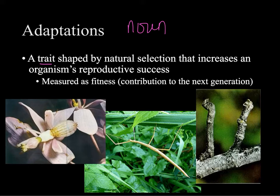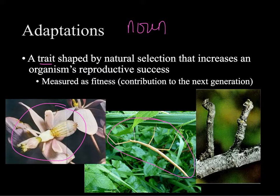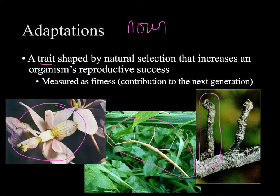One of the most common adaptations we see here is camouflage. Starting with the picture on the left, there's an insect camouflaged to look very much like a flower — its head, thorax, abdomen, even its wings look like petals. There's also a stick insect, and a caterpillar with an adaptation of camouflage to look just like a twig on a branch. All of these adaptations help these organisms survive because they're less likely to be eaten by predators, or if they're the predator, they can sneak up on prey more easily.